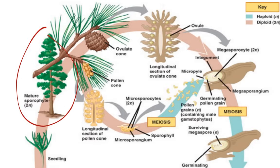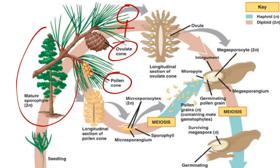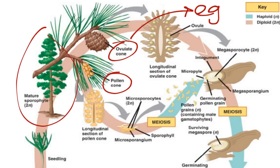That pine tree, as it gets larger and reaches an age and size where it can reproduce sexually, will produce many ovulate cones and many pollen cones. The ovulate cones we can think of as the female part of the tree, and the pollen cones we can think of as the male part of the tree. Obviously, the ovulate cone is eventually going to give rise to eggs, and the pollen cone is eventually going to give rise to sperm.